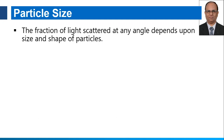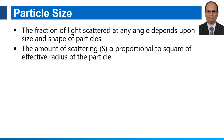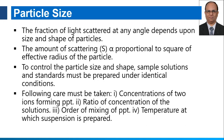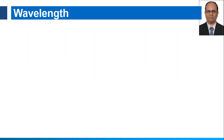The function of light scattered at an angle depends upon the size and shape of particles. The amount of scattering is directly proportional to the square of the effective radius of the particles. For control of particle size and shape, sample solutions and standards must be prepared under identical conditions — in the same laboratory with the same chemicals. We cannot use book values for comparison. Care must be taken that the concentration of the two ions forming the precipitate is properly controlled, and the ratio of concentrations is maintained properly. The most important factor is the order of mixing of the precipitate; whatever procedure is given for preparation, you have to follow the same procedure. Temperature at which the suspension is prepared will affect the particle size and definitively affect the measurements.